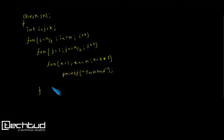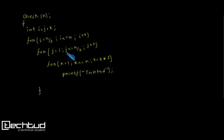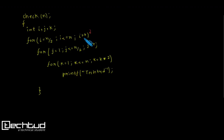Now let's analyze the third check function, which has three independent for loops. The first loop runs i from n/2 to n with increment 1, so it executes n/2 times. The second loop runs j from 1 to n/2, also executing n/2 times.